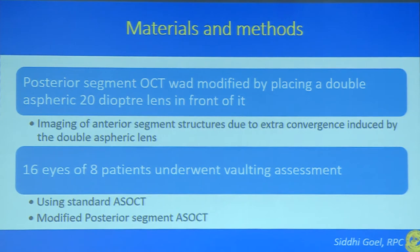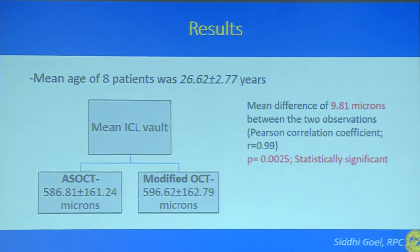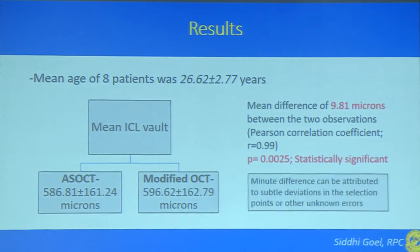Sixteen eyes of 8 patients underwent vaulting assessment using both standard ASOCT and the modified posterior segment OCT. Mean age was 26 years. Mean ICL vault on ASOCT was 586 microns, whereas on the modified OCT it was 596 microns — a mean difference of 9.8 microns which was statistically significant. However, this minute difference could be attributed to subtle deviations in selection points or other unknown errors.